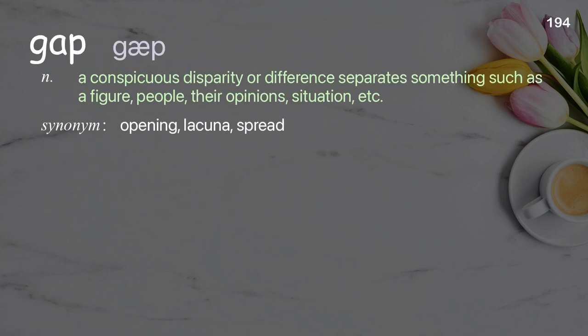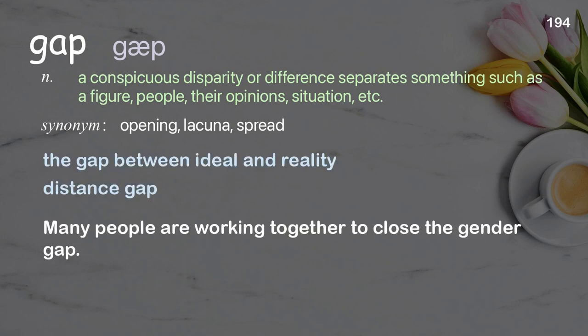Gap: a conspicuous disparity or difference that separates something such as figures, people, their opinions, or situations. Examples: the gap between ideal and reality, distance gap. Many people are working together to close the gender gap.